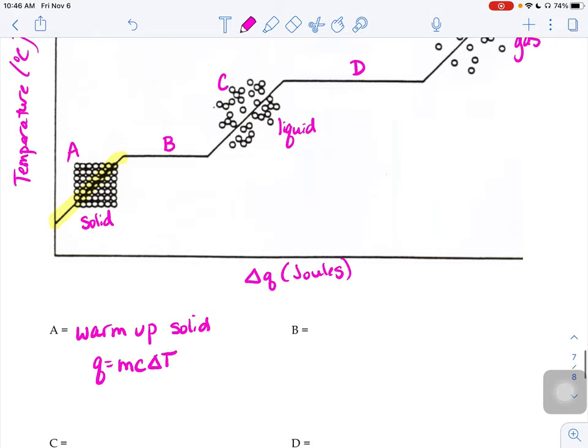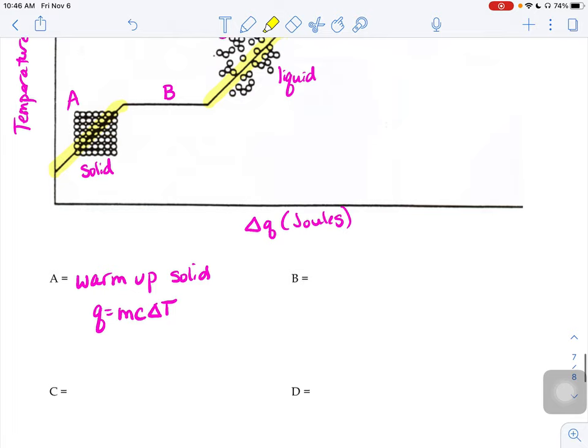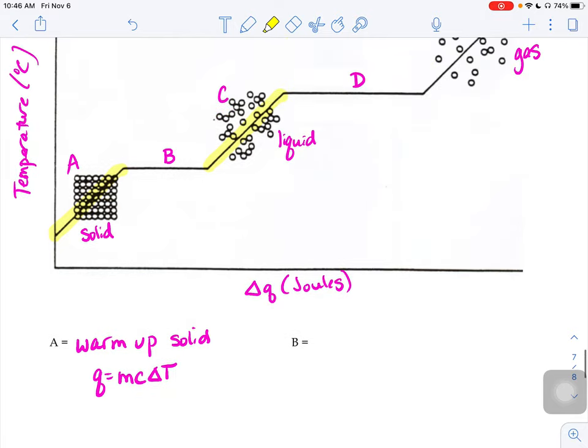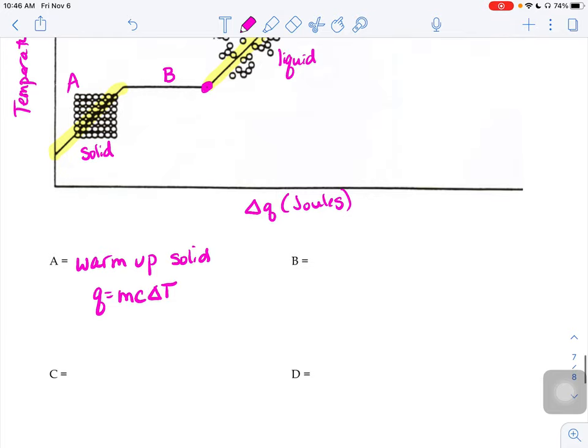The same thing happens if you're in section C of this graph, where it stays one state of matter the whole time. You're just warming up your liquid. Right at this corner of C, it's just a really cold liquid. But by the time you get up to this corner of C, it's a really hot liquid. So we're just warming up our liquid. So we could use the Q equals MC delta T equation. Again, we would just use the liquid C value instead of the solid C value.